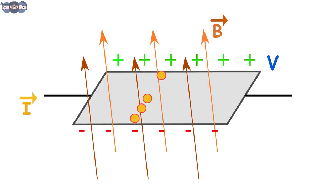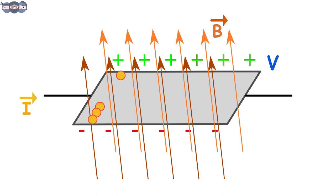Now, if the current is kept constant and the magnetic field is increased, more electrons get disturbed, thus increasing the voltage.